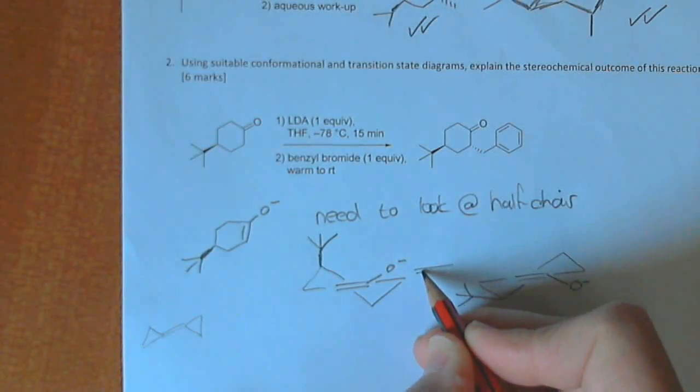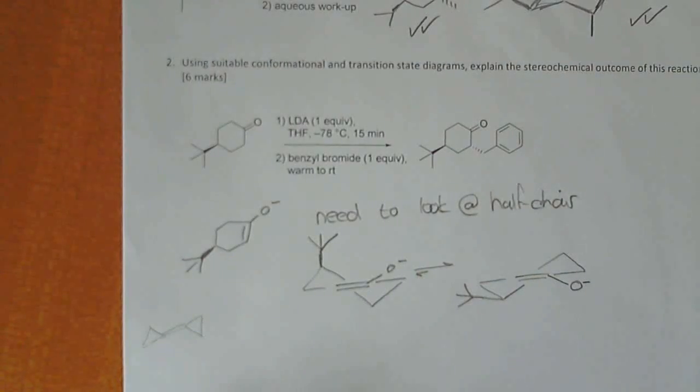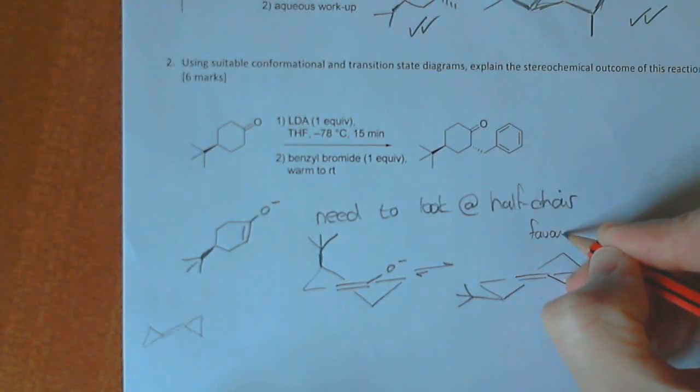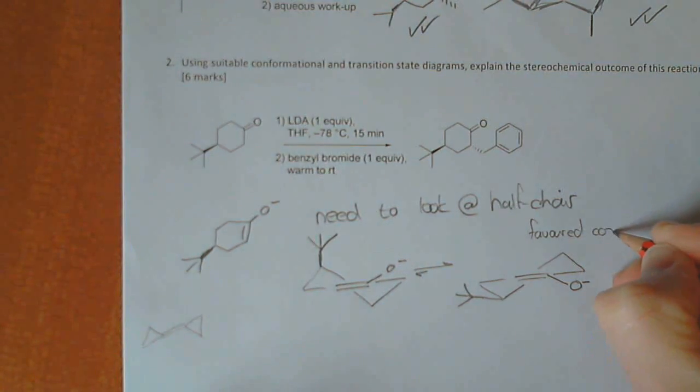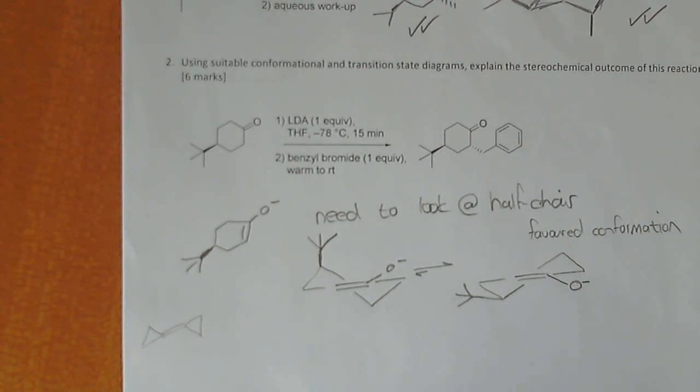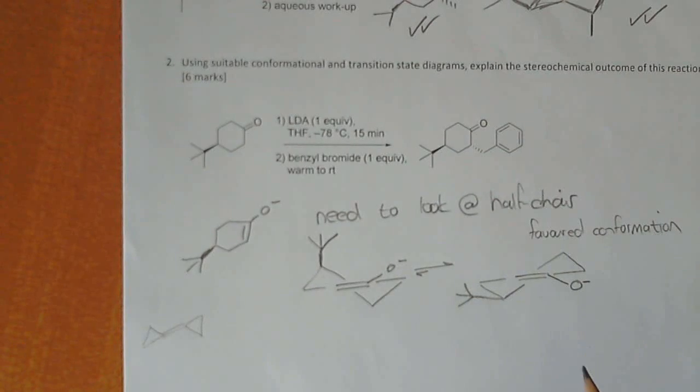This one must be the favored conformation. So we can indicate that with equilibrium arrows. You can also write here: this is the favored conformation. So you would have got some marks for doing that. So that's the first step.